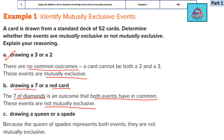For part C — drawing a queen or a spade — you will find a queen in the set of spades. The queen of spades represents the common outcome, as it belongs to both the queen category and the spades category. Since they do have common outcomes, they are not mutually exclusive.